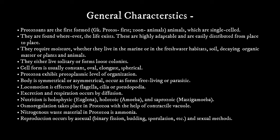The body of protozoans can be symmetrical or asymmetrical. They occur as either free-living forms — meaning they do not need a host — or as parasitic forms, which require a host to survive. Their locomotory organs include cilia or flagella, by means of which they perform movement. Excretion and respiration both occur by diffusion.